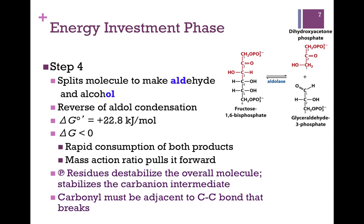Aldolase has a large unfavorable change in free energy under standard state conditions, but in the cell it's slightly favorable because we rapidly consume the products. In other words, the mass action ratio — the law of mass action — pulls it forward. It's still a near-equilibrium reaction, freely reversible, and we see those double arrows.